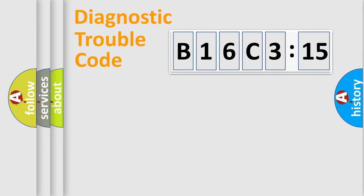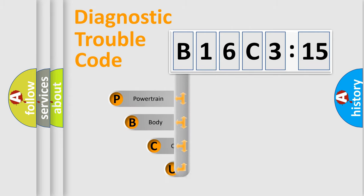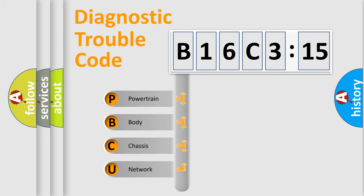We divide the electric system of the automobile into four basic units: Powertrain, Body, Chassis, and Network. This distribution is defined in the first character code.